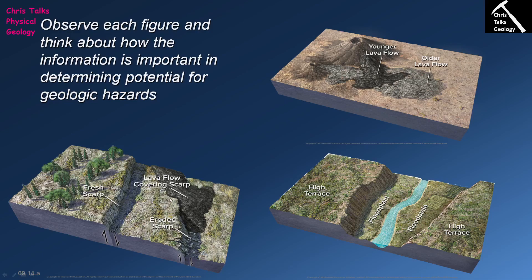Now if we look at this other fault scarp, we can see that it is clearly older. We can tell this because the fault scarp itself has been eroded, producing a pile of rubble at the foot of the fault scarp, so we know it must be older than the fresh fault scarp. We can also see that a lava flow has come along and run along the edge of this eroded fault scarp.